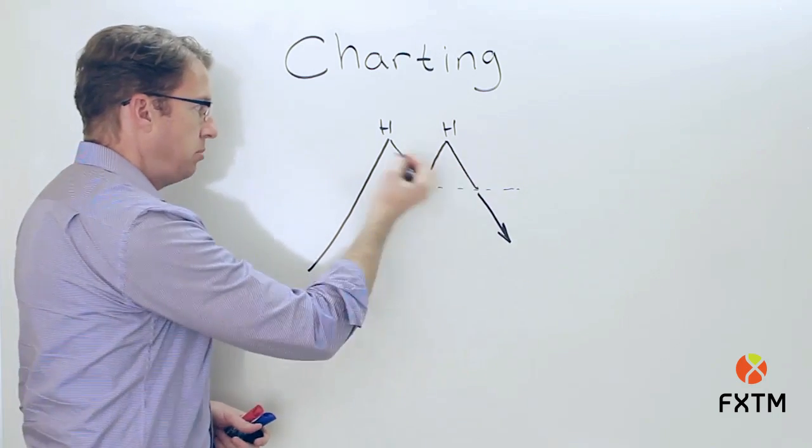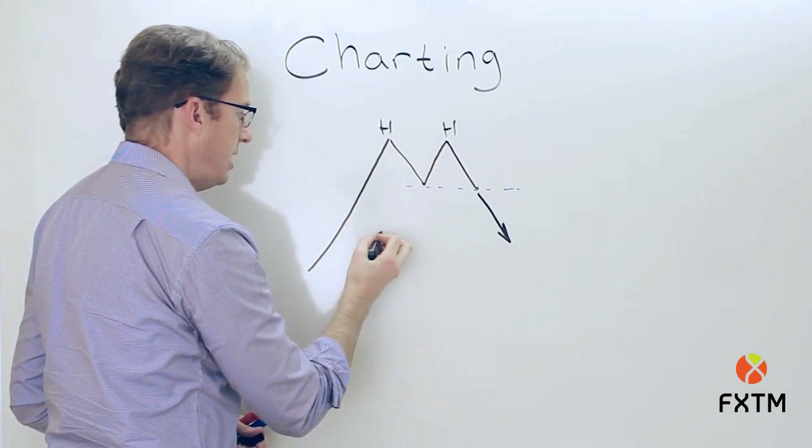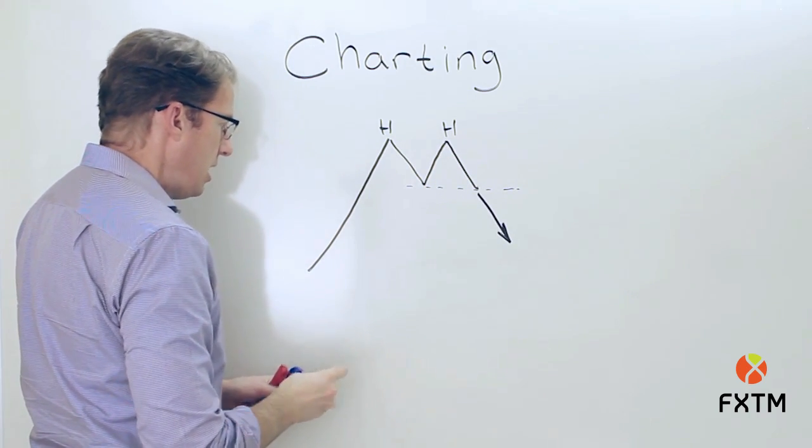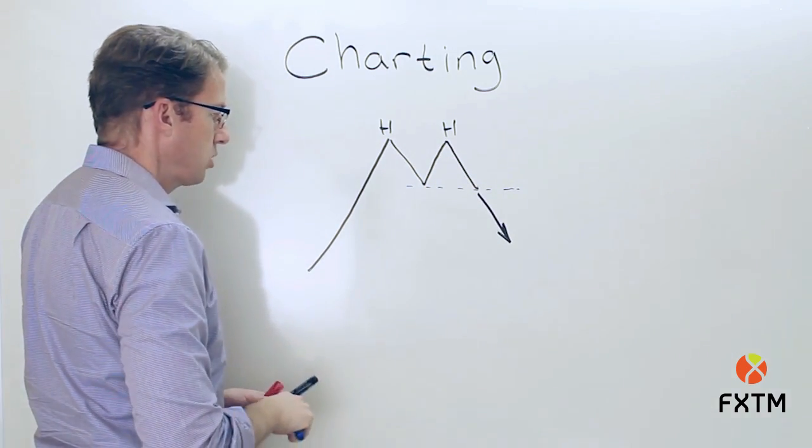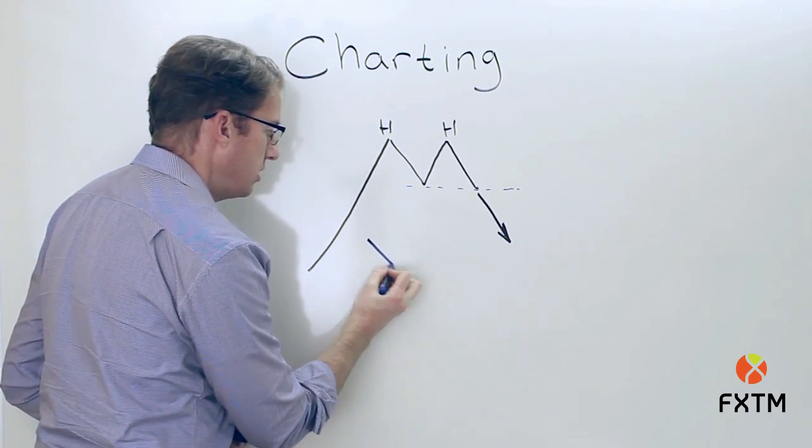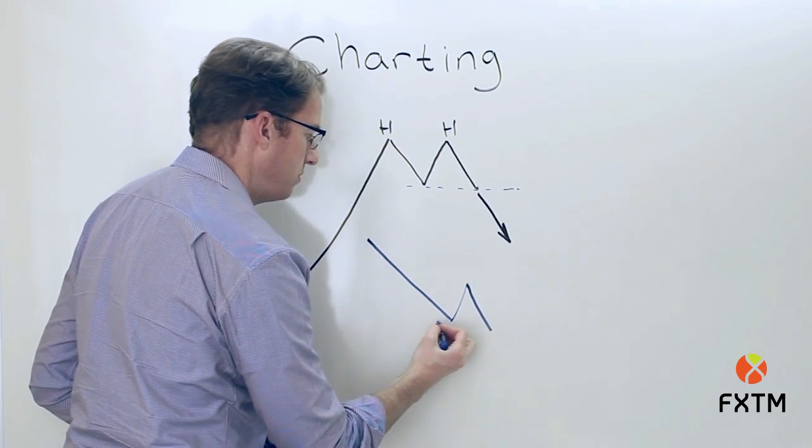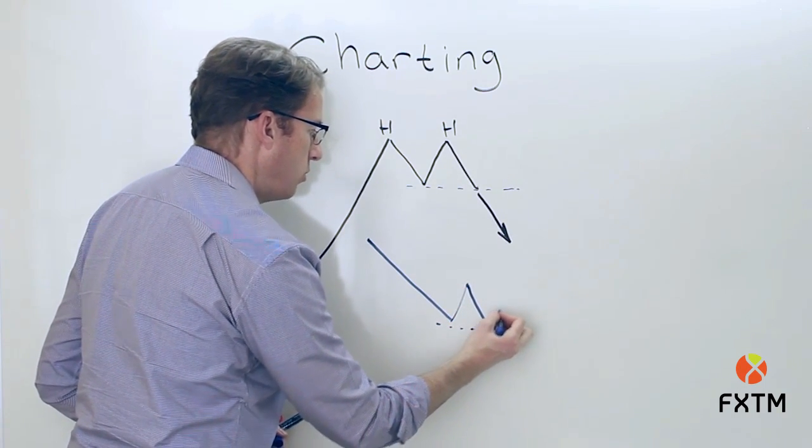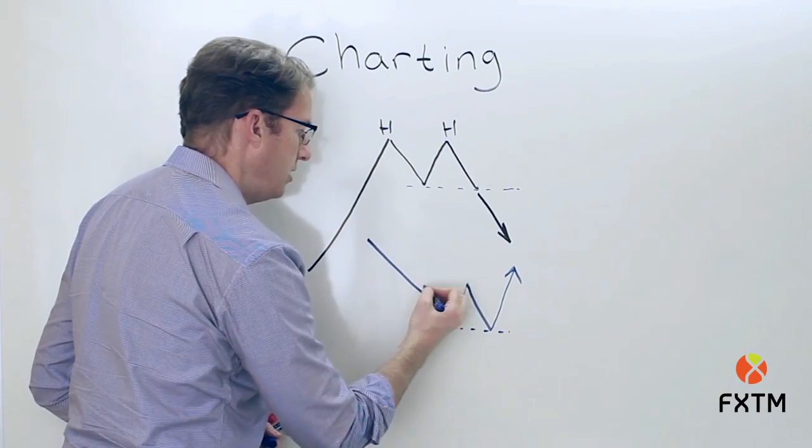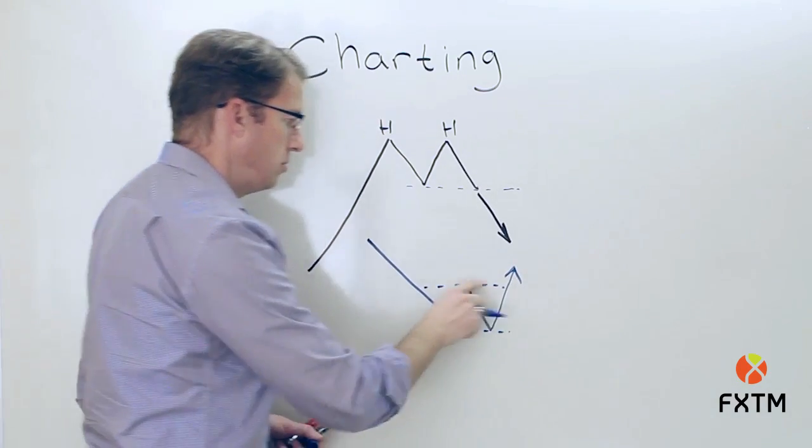For example, a double top that we just looked at could easily be a double bottom. We're looking for the mirror image, which means that initially the trend would be negative, then we form a couple of lows that are roughly at the same price level with a move up beyond that midpoint in the double bottom.